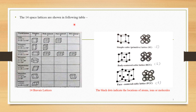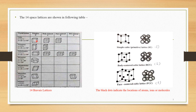Now we study the structures of these 14 basic lattices. For the cubic system, there are 3 space lattices: primitive, body-centered, and face-centered. For tetragonal, 2 Bravais lattices are possible; orthorhombic has 4; hexagonal has 1; rhombohedral has 1; monoclinic has 2; and triclinic has 1. These total 14 Bravais lattices.